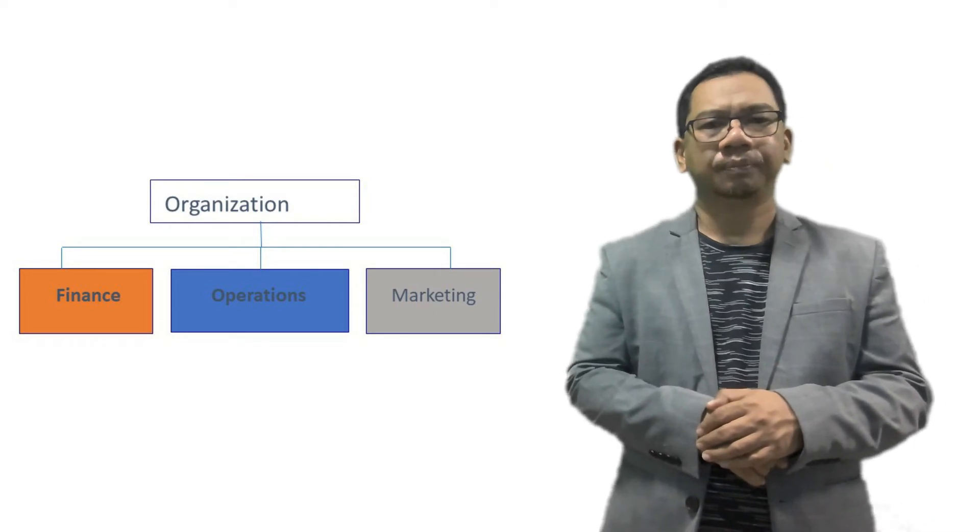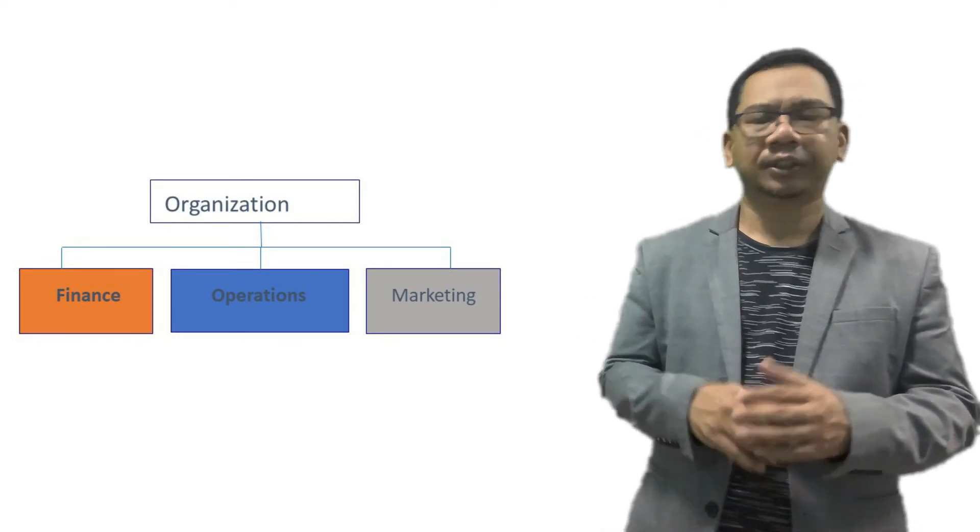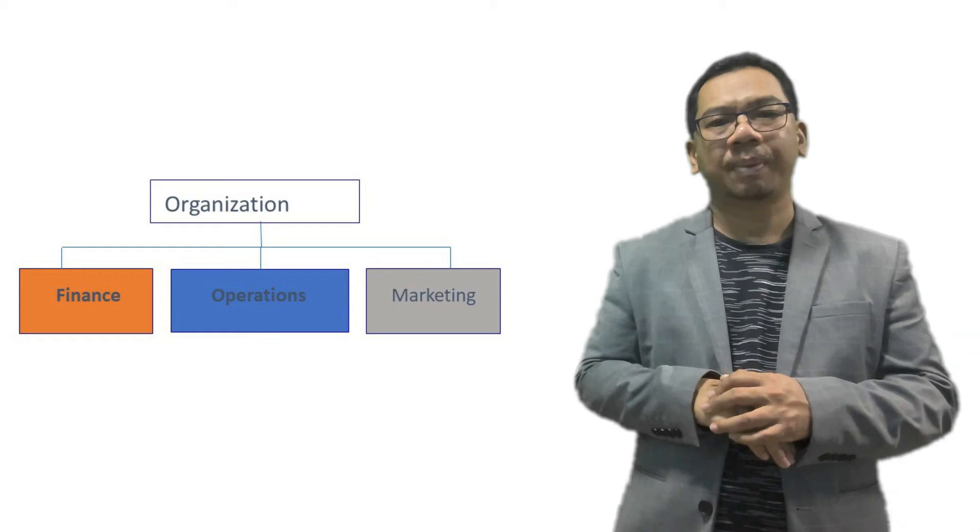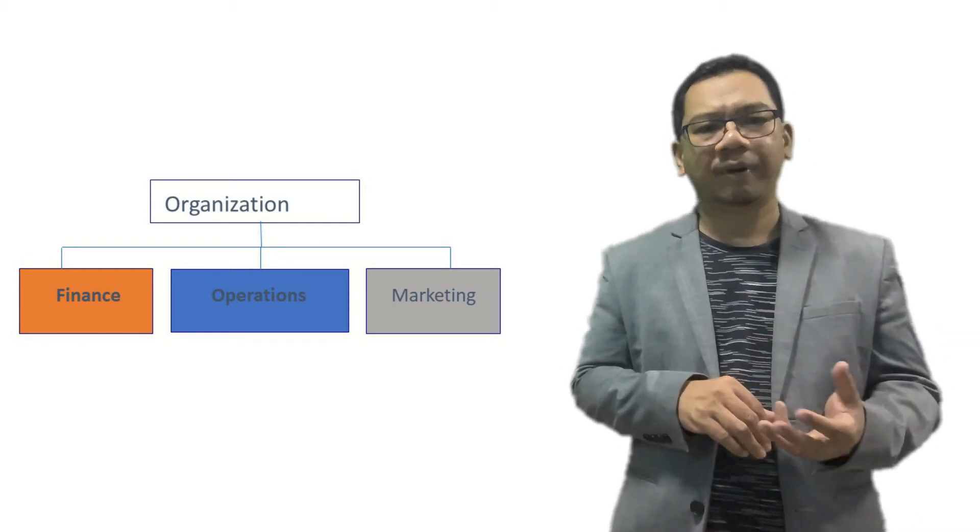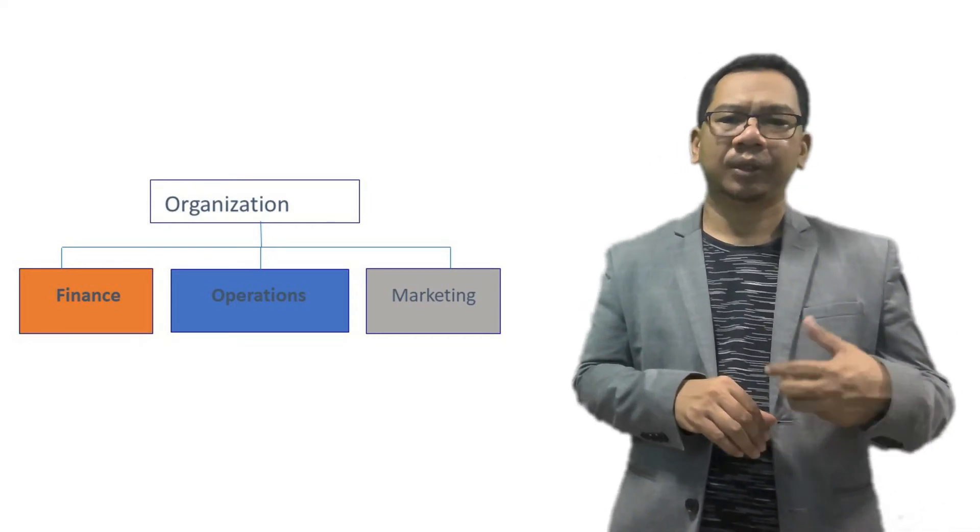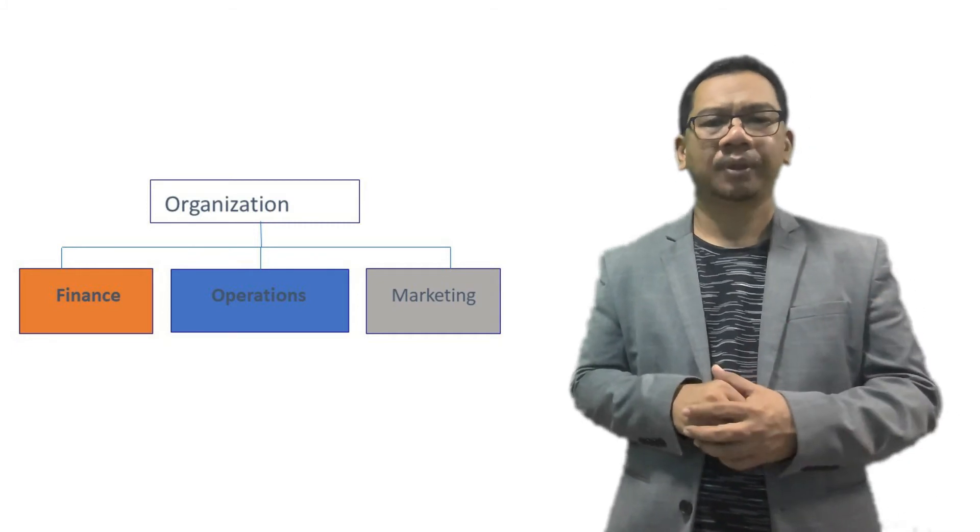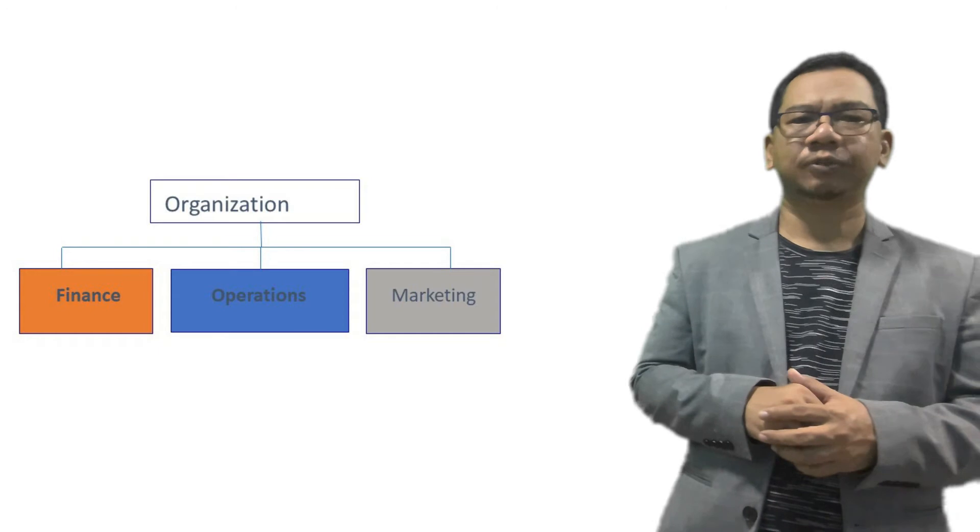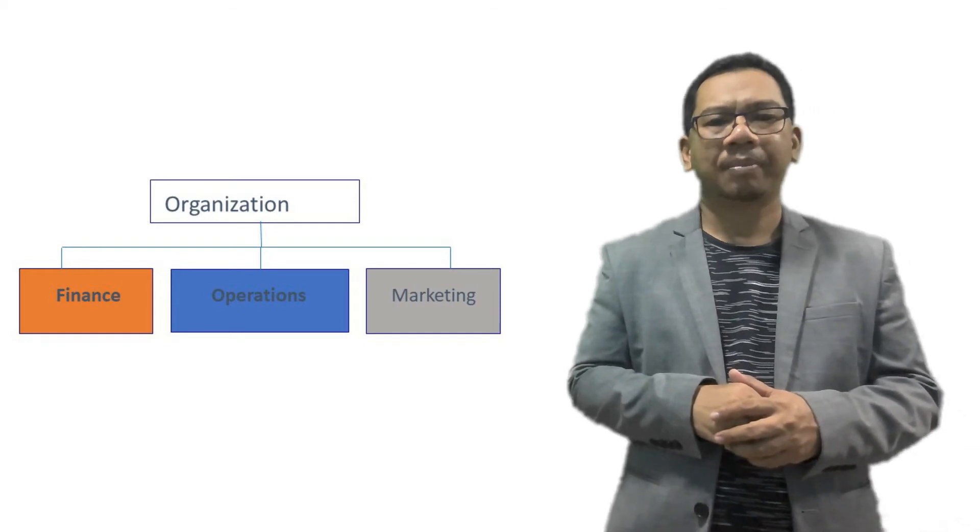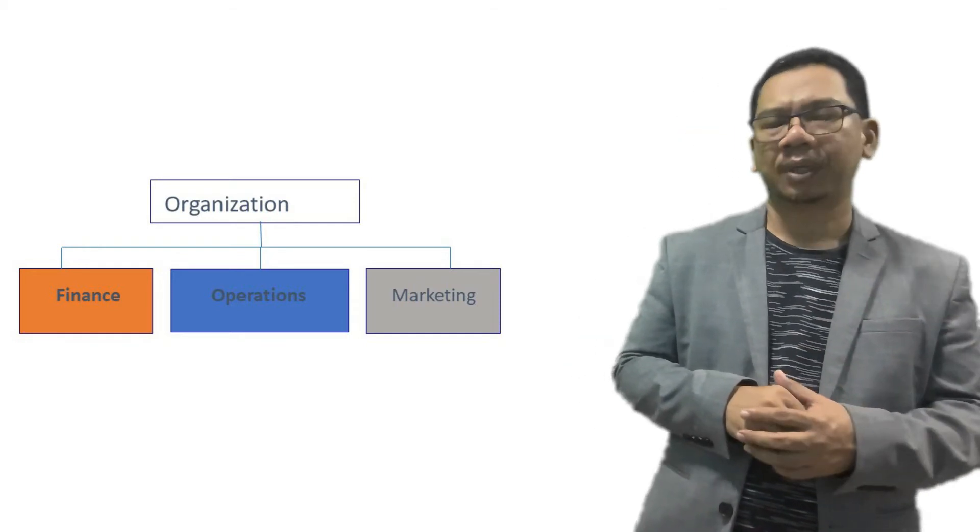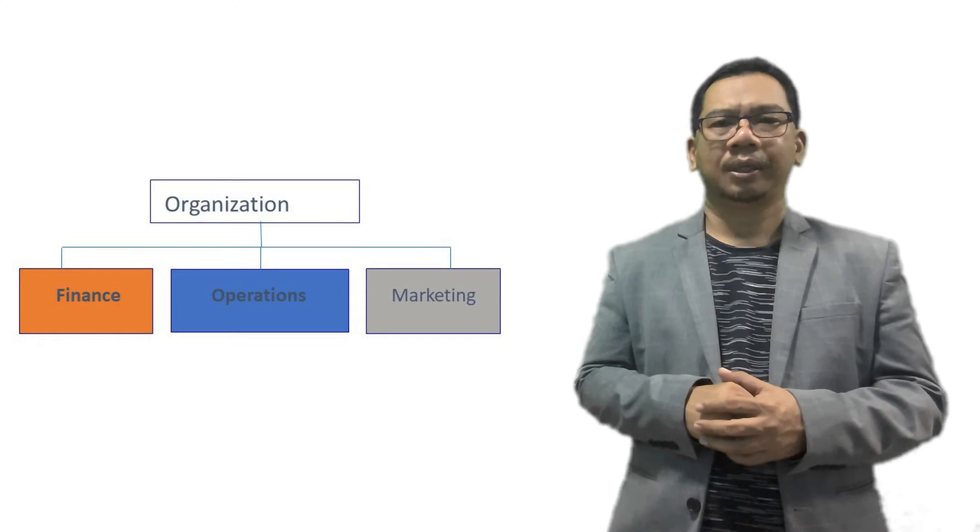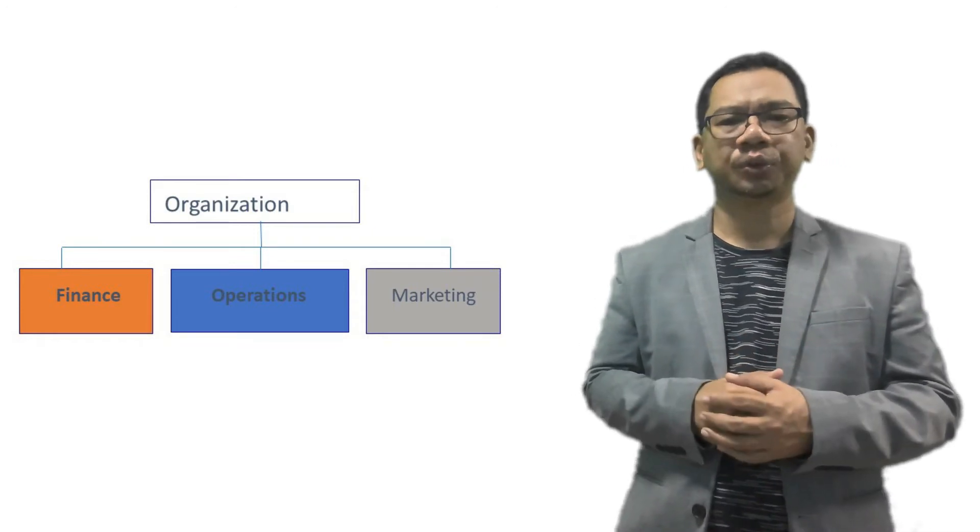Beside the core function, we do have departments that support the operation. Marketing, for example, is the supporting department and the marketing function is to identify the customer needs and requirements and then to generate and stimulate demands. Another supporting department is finance and accounting department. This function of the department is to track and to monitor the company's financial performance, the financial health, paying bill, deal with salaries issues and etc.